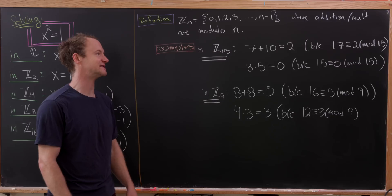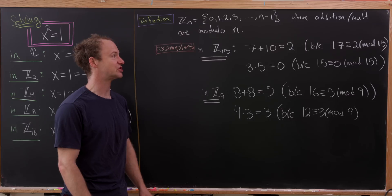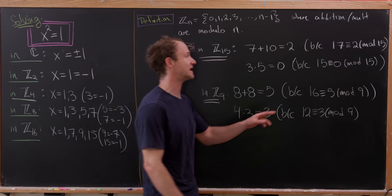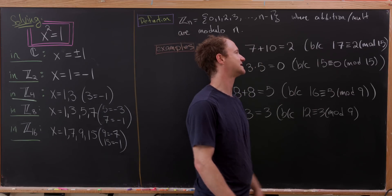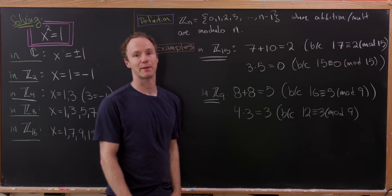So for example, in ℤ₁₅, we have 7+10 = 2. That's because 7+10 is 17, but if you divide 17 by 15, you get a remainder of 2. In other words, 17 is congruent to 2 mod 15. So there, we just kept the remainder.